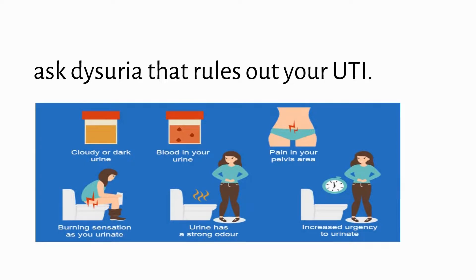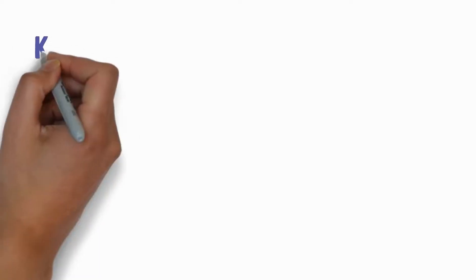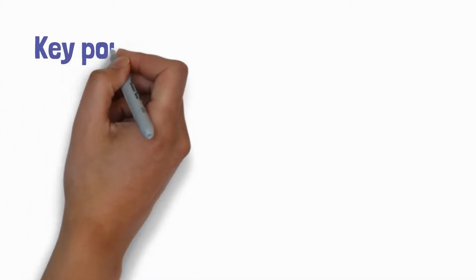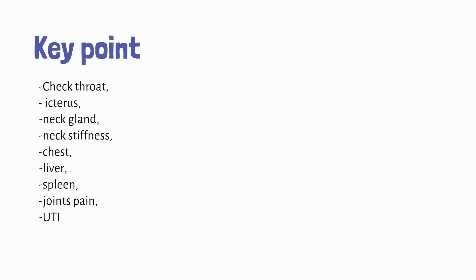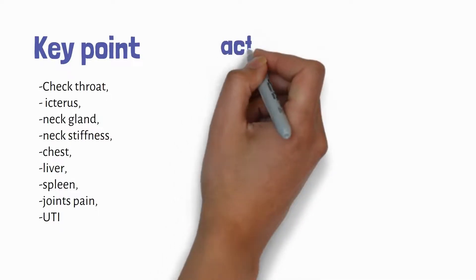Key points in summary for fever without chills: check throat, icterus, neck glands, neck stiffness, chest, liver, spleen, joint pain, and urinary tract infection.